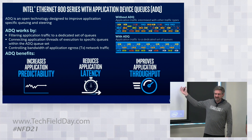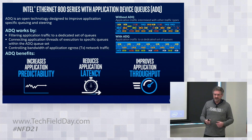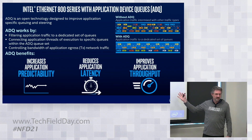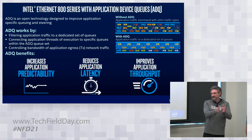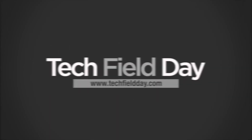Sometimes throughput isn't the issue — it's the predictability of the latency and response times within that application, especially as you scale out with a cluster of servers, and that's really where we're starting to target this. With ADQ, instead of RSS directing traffic into any available queue, you can set up traffic to go into express lanes and dedicated routes and control the speed of those individual areas.